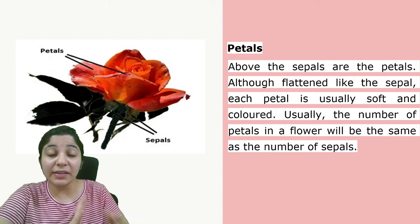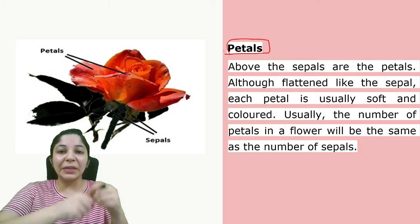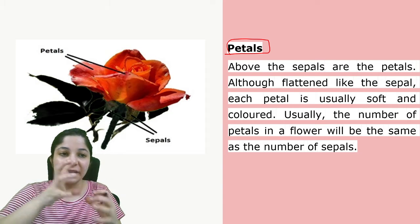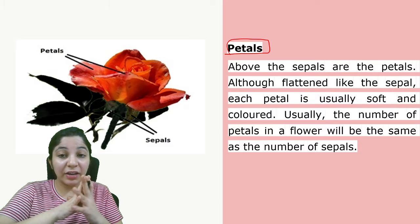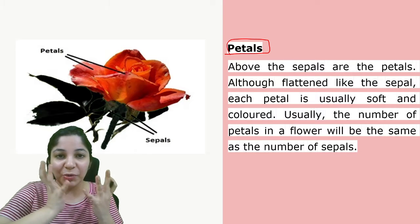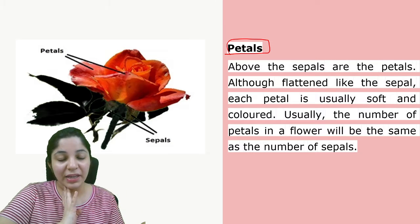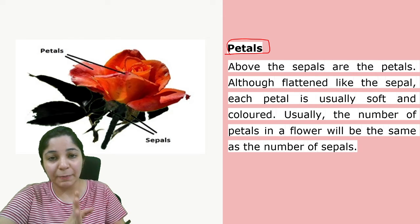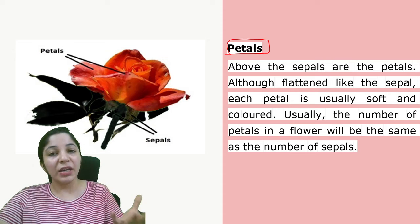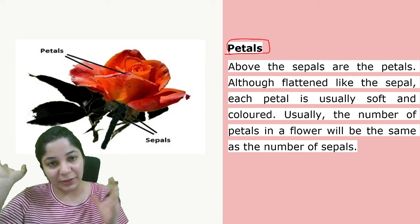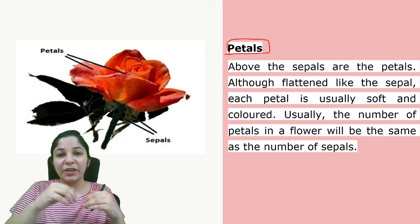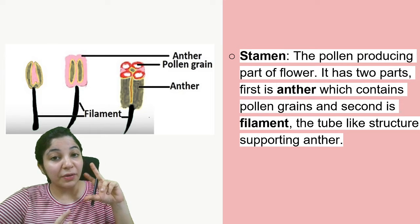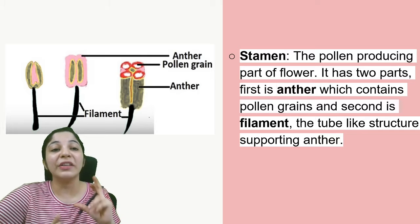Now let's look at the next part — petals. As you can see, these are the petals of the rose. Above the sepals are the petals. They are very soft, colored, and they are the ones that actually give fragrance. Usually, the number of petals in a flower will be the same as the number of sepals. So if there are 10 to 12 sepals, there will usually be 10 to 12 petals as well.